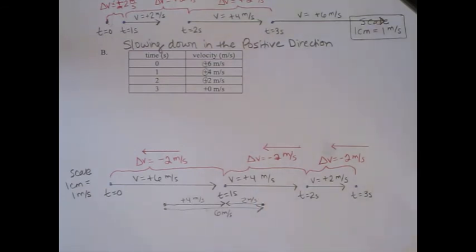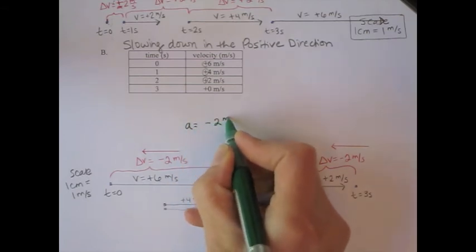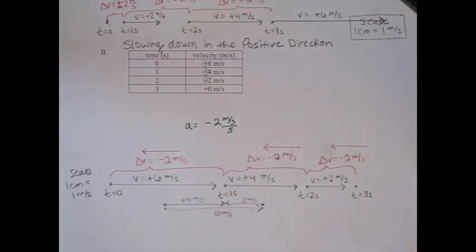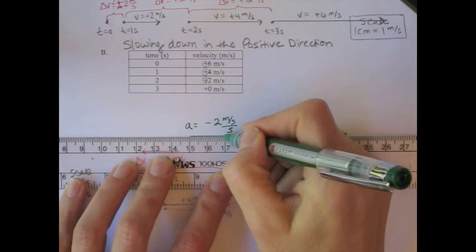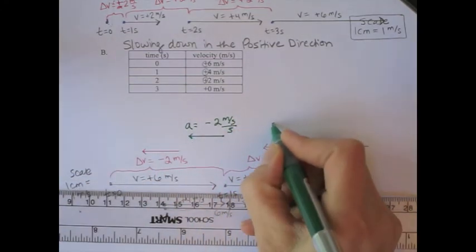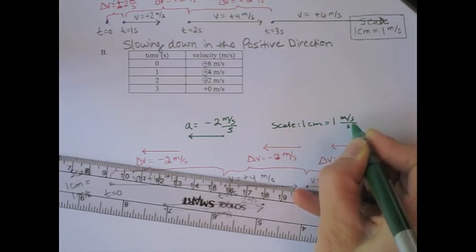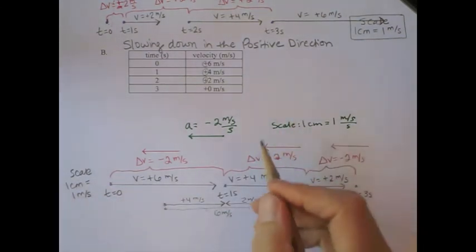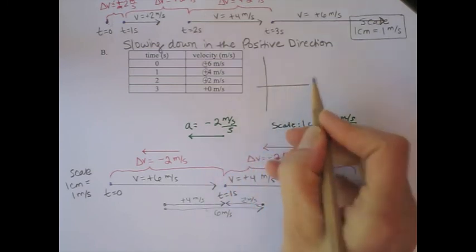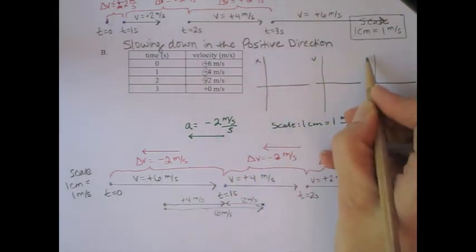The acceleration is the change in velocity of negative two meters per second every second, so the acceleration is negative two meters per second squared. We can draw this as a vector using a scale of one centimeter equals one meter per second squared. Now we want to draw the graphs for position, velocity, and acceleration.